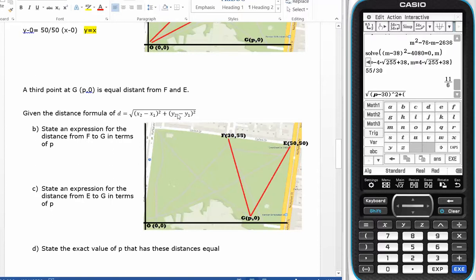And then I want y2, and y2 is zero. y1 is 55, and that is also squared, all under the square root. And there is my answer.